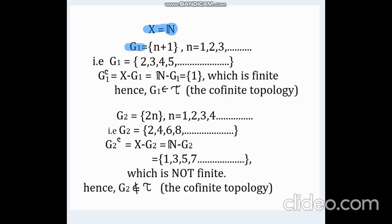Here I have taken the set X to be the set of all natural numbers N. Now let G₁ be the set {n+1}, where n ranges from 1 to infinity. That is G₁ consists of the elements 2, 3, 4, 5, and so on. Now the complement of G₁ is X minus G₁, that is N minus G₁, which is the singleton set {1}. And obviously this is finite. Hence G₁ belongs to the co-finite topology.